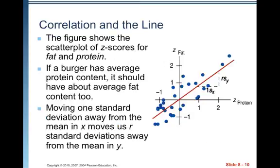Correlation and the line. The figure shows the scatter plot of Z-scores of fat and protein. So they went and found the Z-scores. If a burger has average protein content, it should have about average fat content too. Moving one standard deviation away from the mean in X moves us r standard deviations away from the mean in Y.